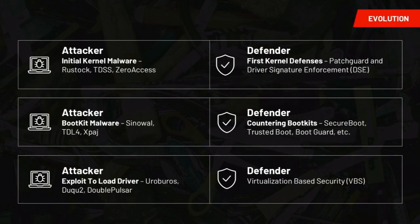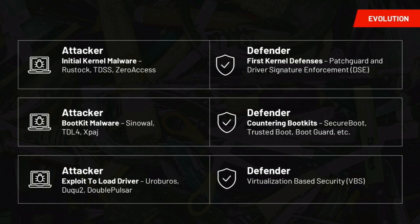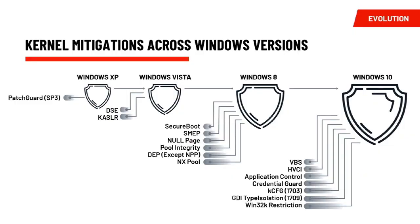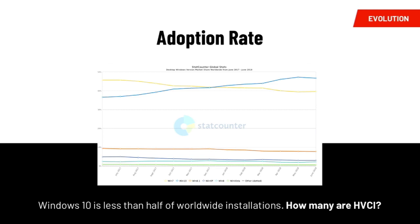This chart summarizes the last decade: originally malware authors had no defenses to worry about, loading code directly into kernel mode. Microsoft then released PatchGuard and Driver Signature Enforcement. Attackers moved to using bootkits, which were countered with Secure Boot. Adversaries then started using exploitation to load kernel code, and Microsoft released VBS to counter that. Microsoft has put significant investment into this over the years with increasing momentum recently, but one problem is adoption rate — there are still tons of systems running Windows 7, so many users aren't getting the benefit of the latest protections only available in Windows 10.